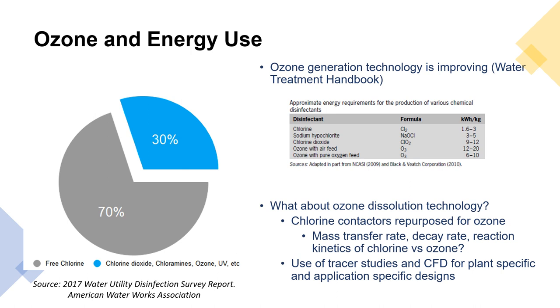Ozone has still not been adopted much in the United States as it has been in Europe for many reasons. The ozone generation technology is improving, and at the same time, we need to look at improvements in ozone dissolution technology. I feel like a lot of the technology is based off remnants of chlorine contactor design. We need to consider many things including mass transfer, decay, reaction rate, and reaction kinetics. Also we need to try to use tracer studies and CFD where possible for plant specific and application specific designs.